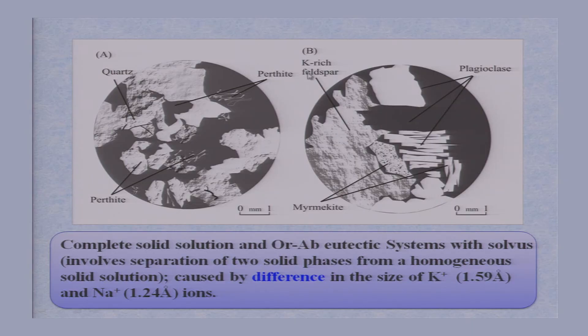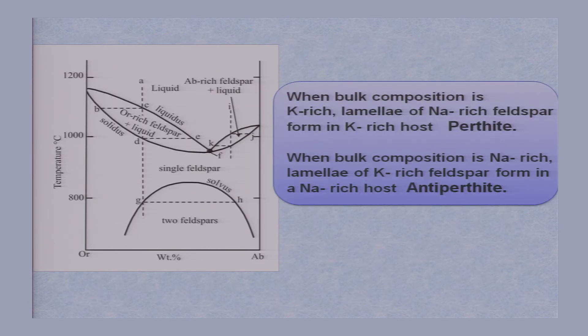As a result, orthoclase- and K-feldspar-rich phases are present. The Na ions can be replaced by K ions, and as a result you get perthitic texture. This perthitic texture forms because Na and K have more or less similar ionic radii. If there were a vast difference in ionic radii, such replacement would not take place and you would not get perthite or antiperthitic textures. When bulk composition is K-rich, lamellae of Na-rich feldspar form in a K-rich host, and perthitic texture will form.